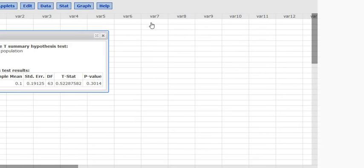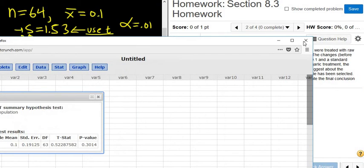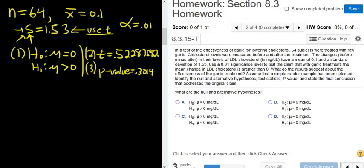And now we get to do our test decision. In our test decision, we have to decide whether or not to reject or fail to reject the null hypothesis. So if the p-value is smaller than alpha, we reject. If it's bigger, we fail to reject. So in this case, we fail to reject H sub 0.